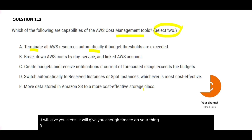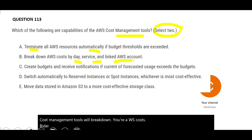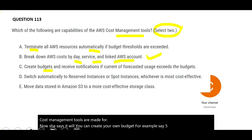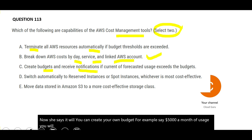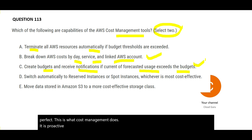Option B says cost management tools break down your AWS costs by day, service, and linked accounts — that is exactly what cost management tools are made for. Option C says you can create budgets, for example five thousand dollars a month, and you will receive notifications when your forecasted usage exceeds the budget. This is correct and proactive.